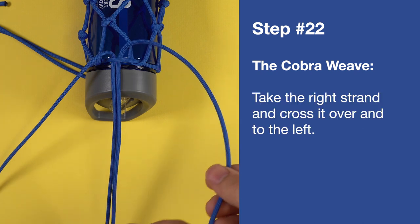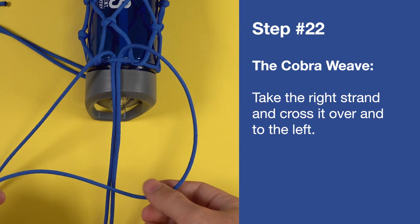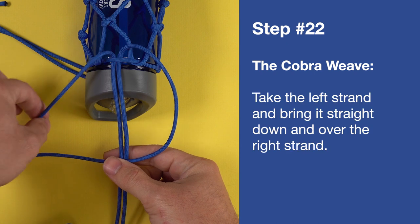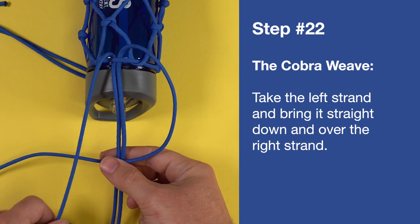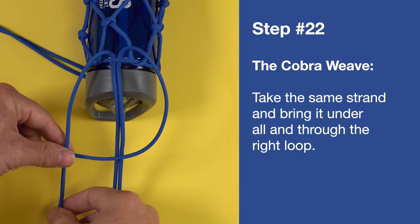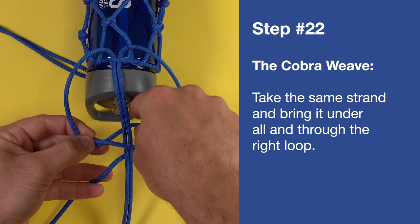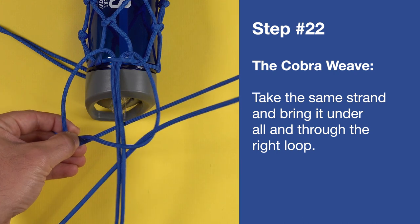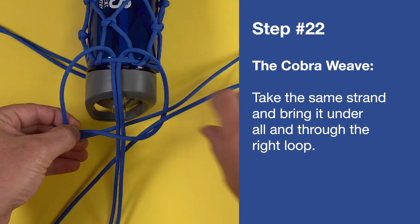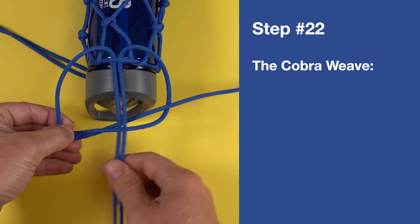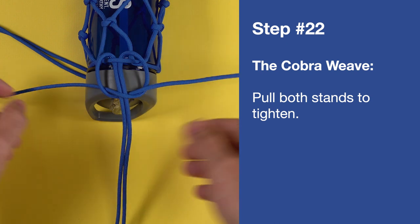For the cobra weave, take the right strand and cross it over to the left. Take the left strand and bring it straight down and over the right strand. Take the same strand and bring it under all and through the right loop. Pull both strands to tighten.